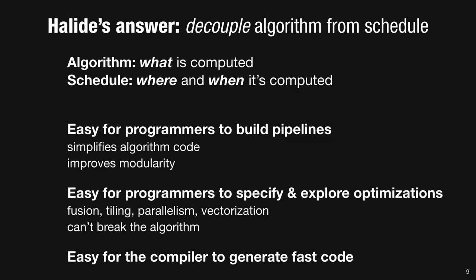This makes it easier for you, the programmer, to write algorithms with lots of unnecessary details stripped away, and then to compose them into pipelines. It makes it easy to specify and explore different optimizations. Unlike in C, changing the schedule cannot change the meaning of the algorithm. And then it leaves the compiler to do the painful but deterministic work of generating fast code which implements the pipeline given a defined schedule.